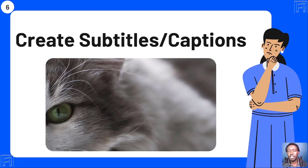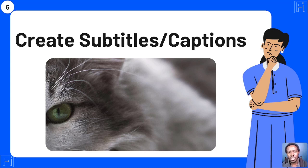Use case number six: you can easily create subtitles or captions for your videos. Descript supports creating SRT (SubRip) subtitles or WebVTT (video text track) subtitles. A great feature is the ability to set the number of characters per line — for example, around 37 characters per line with two lines — making subtitles easily readable to your audience.